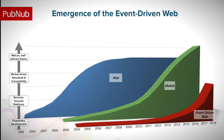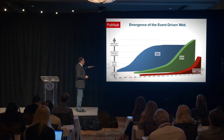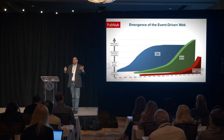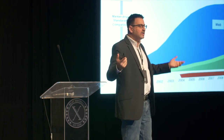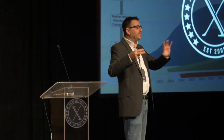I see three big technology waves on the internet. The first was all the infrastructure used to power the web starting in the early 90s. Then came the explosion in infrastructure to power mobile applications. And now we're seeing the explosion of what we call the event-driven web — where events happen, people want to know and control things in real time. We're pioneering the infrastructure for that. That's PubNub. And we'll probably be raising a round in the next year, so if anyone's interested, let me know. Thanks a lot.